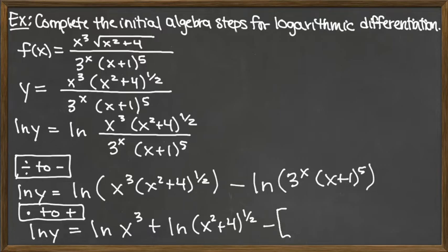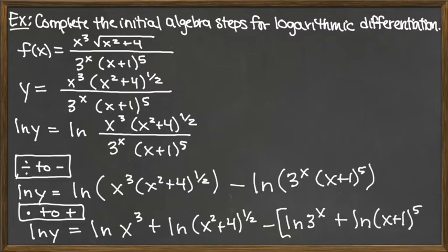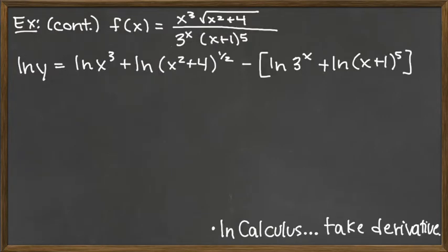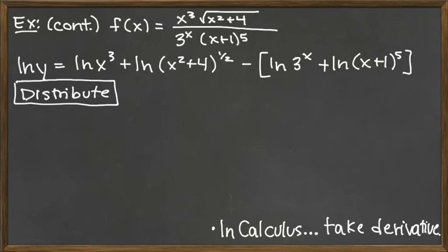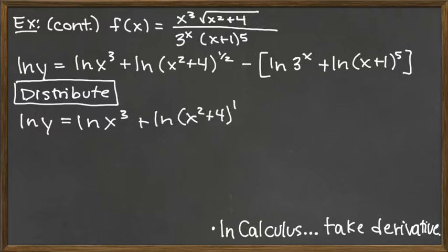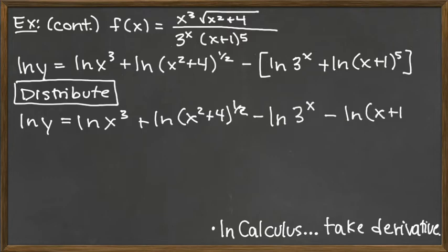So it would be: subtract the natural log of 3 to the x — the first term in the product — and add to it the natural log of x plus 1 to the fifth, then close the grouping symbols. Next, we distribute that subtraction sign through the grouping symbols. So we have natural log of y equals natural log of x cubed, plus natural log of x squared plus 4 to the one-half, minus natural log of 3 to the x, minus natural log of x plus 1 to the fifth.